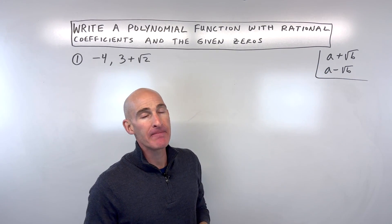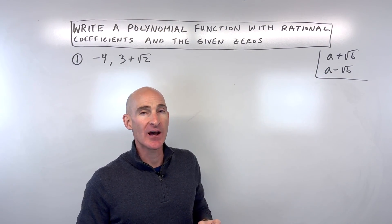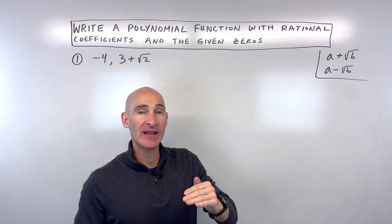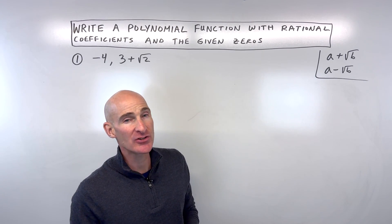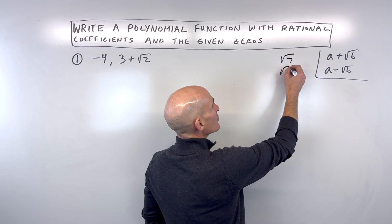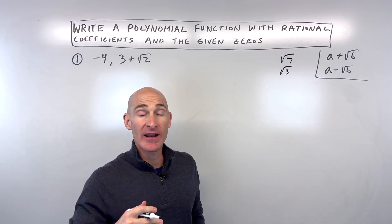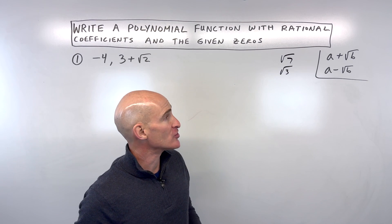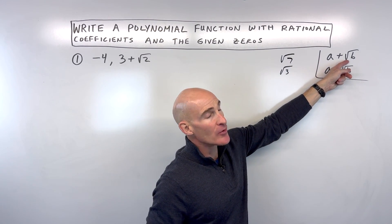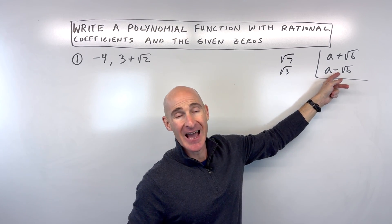What this tells us is that if our polynomial has rational coefficients — remember rational means a ratio of an integer divided by an integer — we don't have any irrational coefficients like square root of seven or square root of three. Then if you have an irrational zero, you're also going to have its conjugate.